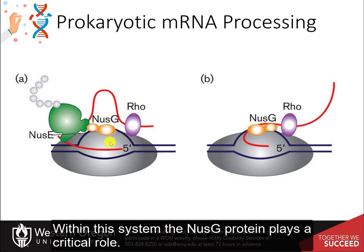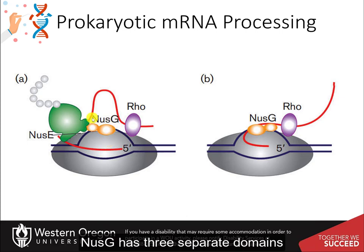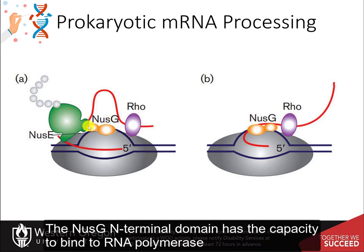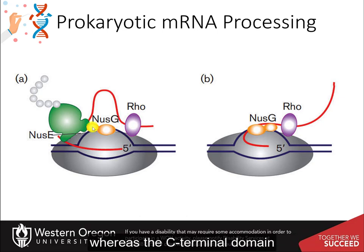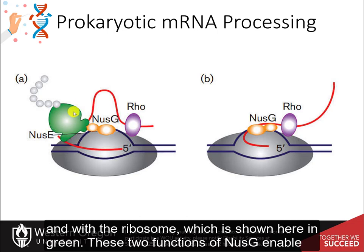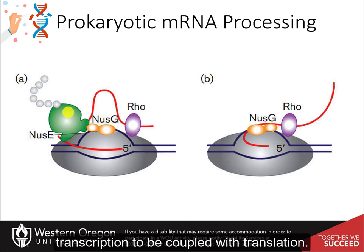Within this system, the NUS-G protein plays a critical role. NUS-G has three separate domains, two of which have known functions. The NUS-G N-terminal domain has the capacity to bind to RNA polymerase, whereas the C-terminal domain can interact with the NUS-E protein and with the ribosome, shown here in green. These two functions of NUS-G enable transcription to be coupled with translation.